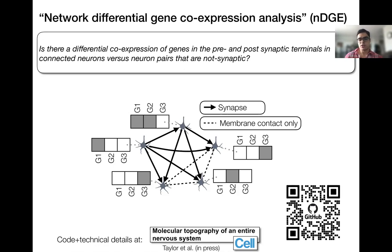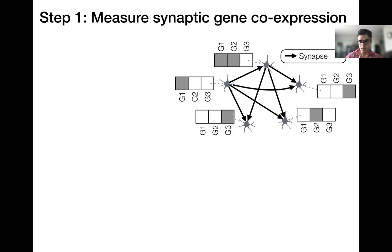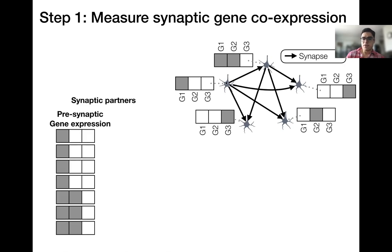Given these two rich datasets of gene expression and connectivity, we developed a computational tool called Network Differential Gene Co-Expression Analysis to decode the genetic correlates of connectivity. In broad strokes, this method aims to measure the co-expression of genes in pre- and postsynaptic terminals in connected neurons and contrasts this with gene co-expression in unconnected neurons with membrane contact only. This method involves four steps. First, we focus on neural partners that share synaptic connections. We tabulate the gene expression in all pre-synaptic terminals for all synapses. Note that in this example there are five neurons but seven synapses, so we list seven pre-synaptic gene expressions, sometimes counting the same neuron multiple times.